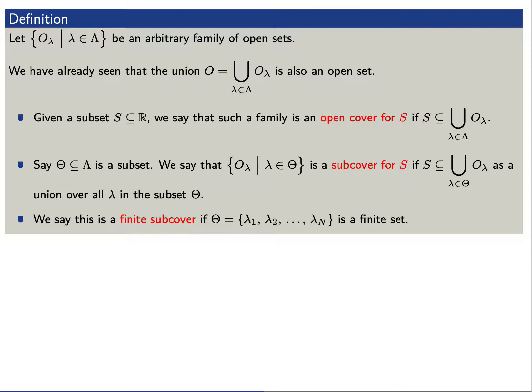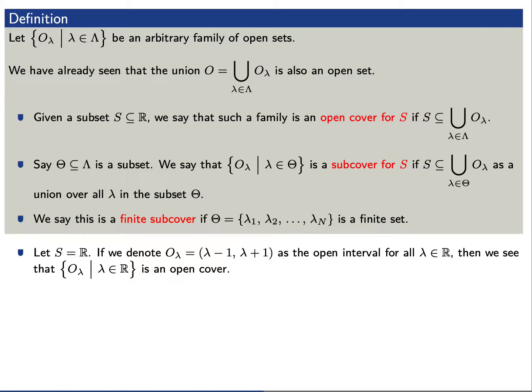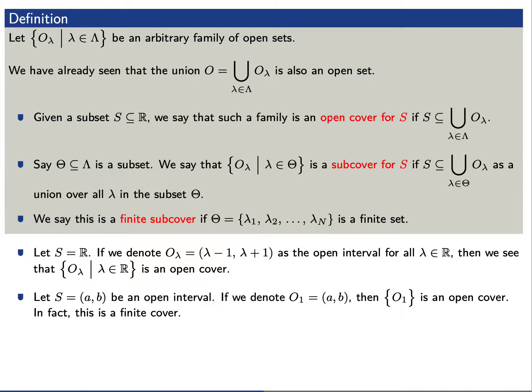Let's give a few examples. First, let's say that S is the real numbers. We'll denote O sub lambda as the open interval from lambda minus 1 to lambda plus 1, where lambda is any real number. Since any real number is contained in one of these O sub lambdas, the family of O sub lambdas, where lambda ranges over the real numbers, is an open cover for the real numbers. Next, let's say that S is the open interval from A to B. We'll denote O sub 1 as the same open interval from A to B. Then the set consisting of just this open set is an open cover for S — in fact, a finite cover, because there is only a finite number of sets in this family.